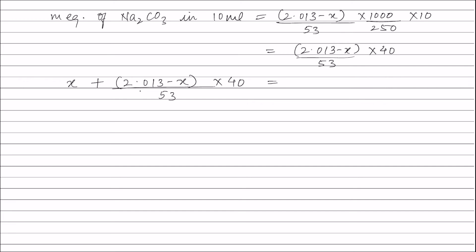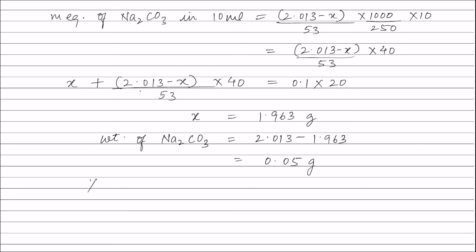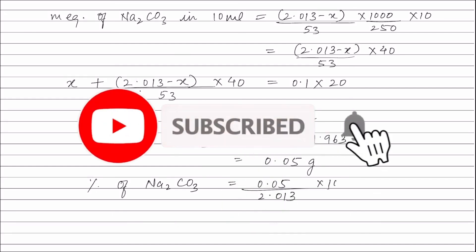Milliequivalence of H₂SO₄ equals normality 0.1 into volume 20 ml. Solving this equation, the value of x equals 1.963 g. Therefore, weight of NaOH is 1.963 g and weight of Na₂CO₃ is 2.013 minus 1.963, which equals 0.05 g. Therefore, percentage of Na₂CO₃ equals 0.05 divided by 2.013 into 100, which equals 2.48 percent.